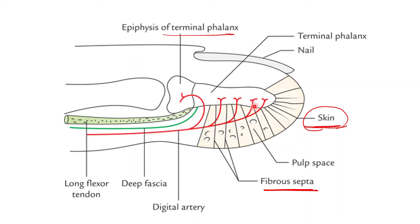The distal four-fifths of the distal phalanx receives its blood supply from the digital arteries by penetrating the dense fibrous septae, whereas the proximal one-fifth of the space gets a separate blood supply without traversing the septae. So the distal four-fifths receives blood supply from the digital arteries penetrating the dense fibrous septae, while the proximal one-fifth gets separate blood supply without traversing the septae.